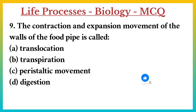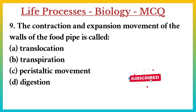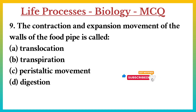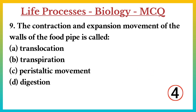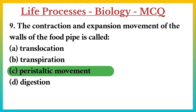Question number 9. The contraction and expansion movement of the walls of the food pipe is called? A. Translocation. B. Transpiration. C. Peristaltic movement. D. Digestion. Answer: C. Peristaltic movement.